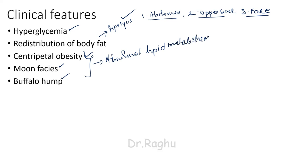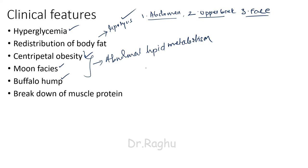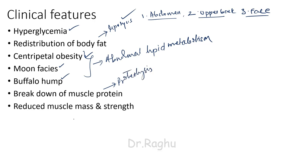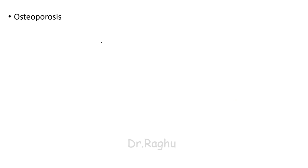There is also going to be a breakdown of muscle protein. Because cortisol causes proteolysis, there will be reduced muscle mass and strength. As a result, the limbs — especially the lower limbs — become extremely thin. Next, there is also going to be osteoporosis.